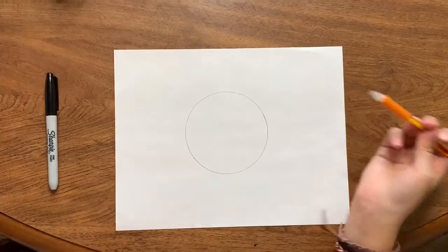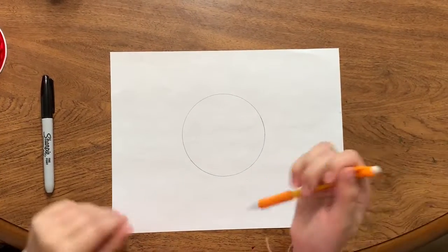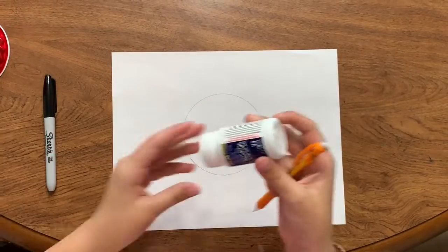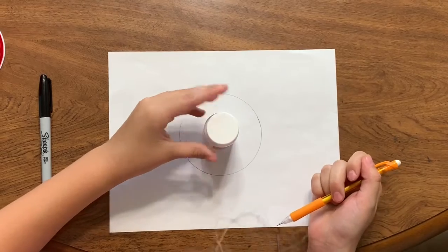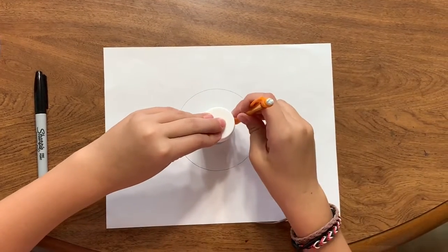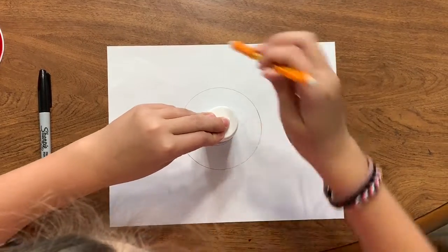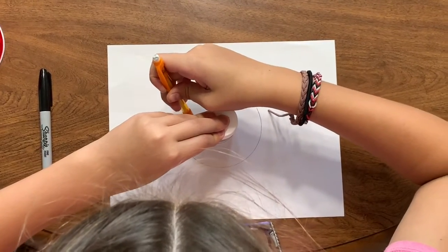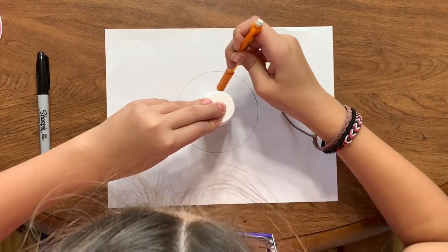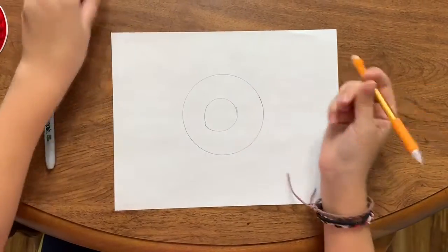Okay, so I got my big circle and I'm just going to use a pill bottle to get my middle circle. Okay, mine's not perfect.